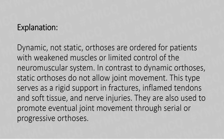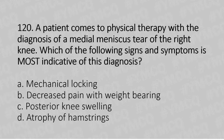Let's move to question number 120. A patient comes to physical therapy with a diagnosis of medial meniscal tear of the right knee. Which of the following signs and symptoms is most indicative of this diagnosis? Option A: mechanical locking. Option B: decreased pain with weight bearing. Option C: posterior knee swelling. Option D: atrophy of hamstring. The answer is option A — mechanical locking.